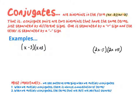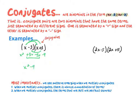Conjugates are binomials in a certain form. They have the same terms — ax and ax — but one pair is separated by a minus sign and the other by a plus sign. For example, (x − 3) and (x + 3) are conjugates. Multiplying them using FOIL: x times x is x squared, then positive 3x, then negative 3x, and negative 3 times 3 is negative 9. The middle terms cancel, leaving x squared minus 9.